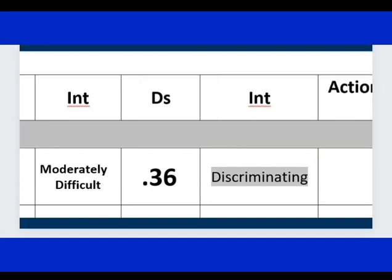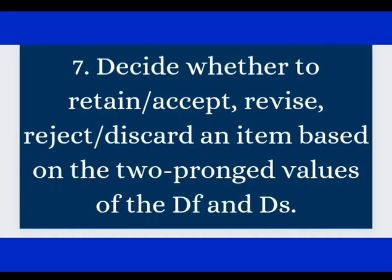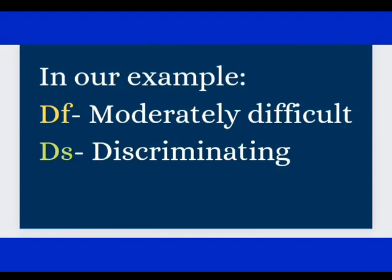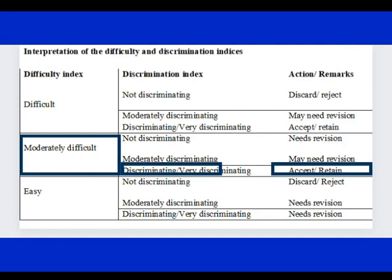So lastly, we have to decide. Having determined already the Df and the Ds, decide whether to retain or accept, revise, reject, or discard an item based on the two-pronged values of the Df and Ds. In our example, we got moderately difficult and discriminating. So what do you think would be our action here? So let's all be helped by this table. So we have the difficulty index column and then discrimination index and then the action or remarks.